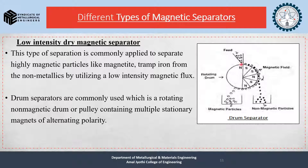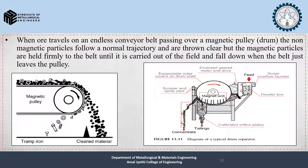The rotating drum consists of multiple stationary magnets of alternating polarities — this is the basic diagram of a drum separator. When ore travels on an endless conveyor belt passing over a magnetic pulley, the non-magnetic particles follow a normal trajectory and are thrown clear, but the magnetic particles are held firmly to the belt until carried out of the field and fall down when the belt just leaves the pulley.